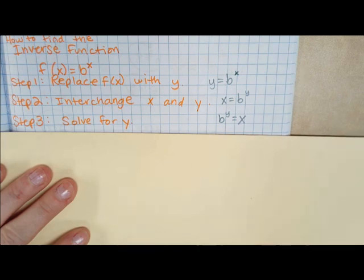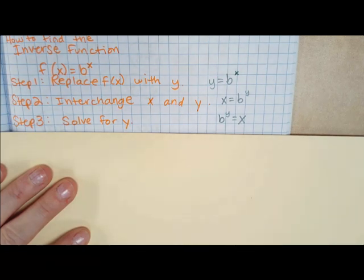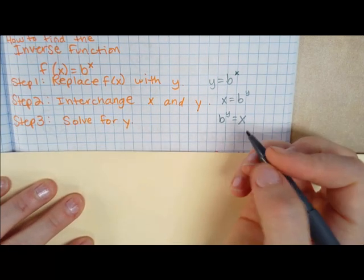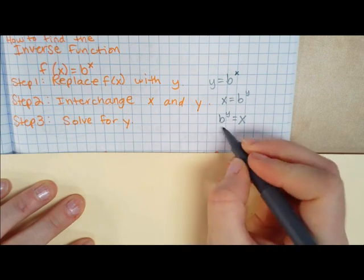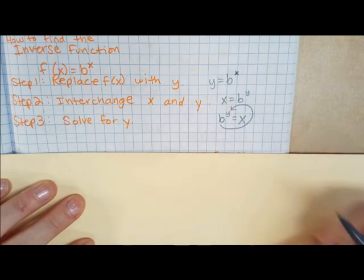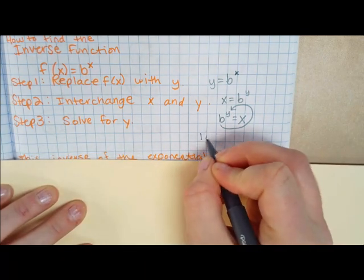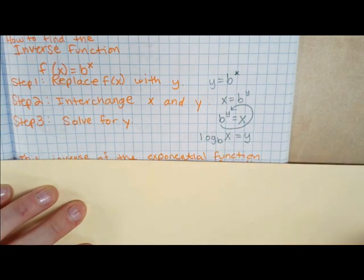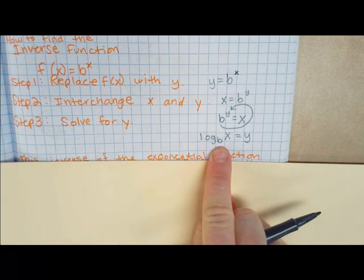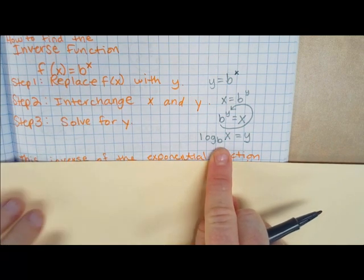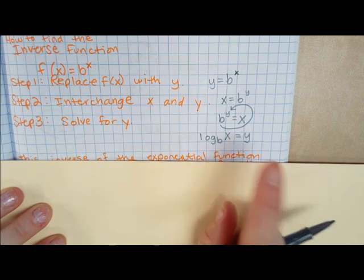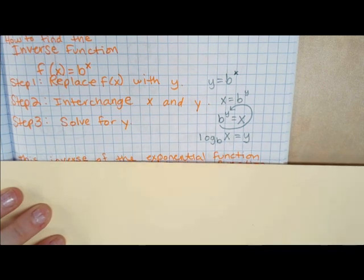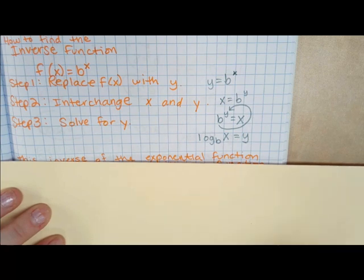Your final step to find the inverse function is to solve for y. But how do you solve this for y? We're going to rewrite this as b to the y equals x, and we want to get it to say y equals. So what it is — if you've been in pre-cal — is log base b of x equals y. This is a property that goes along with exponential and log functions being inverses of one another.